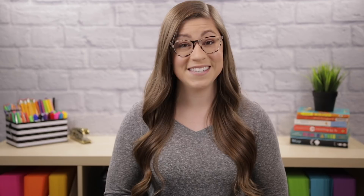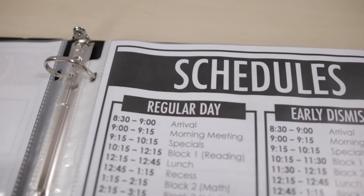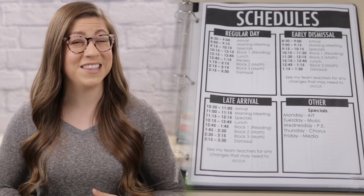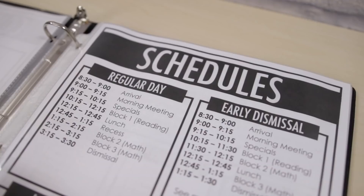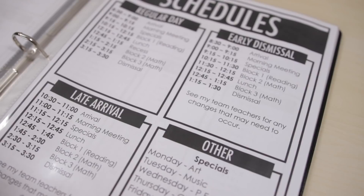The next page is for schedules. You want a list of your average daily schedule with both times and a description of what's happening. You may also want to include schedules for delayed openings or early dismissals — even if you don't plan to be out on those days, it's good to have just in case. I always include a note telling the substitute to check with my team teachers since those schedules can change depending on circumstances. I also include a schedule for specials since my students go to different specials on different days.